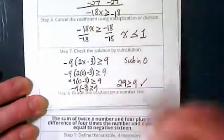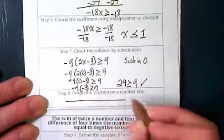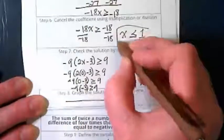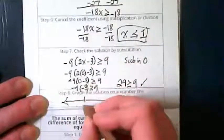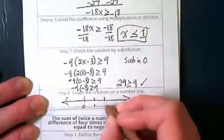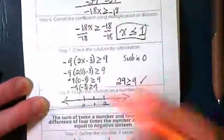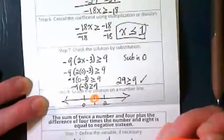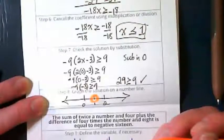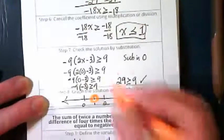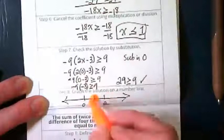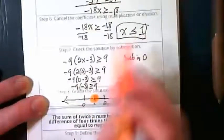This checks then. We can graph our solution that was back up here. 0, 1, 2. Circle the 1. Does it get filled in? Yes. And it goes to the left.